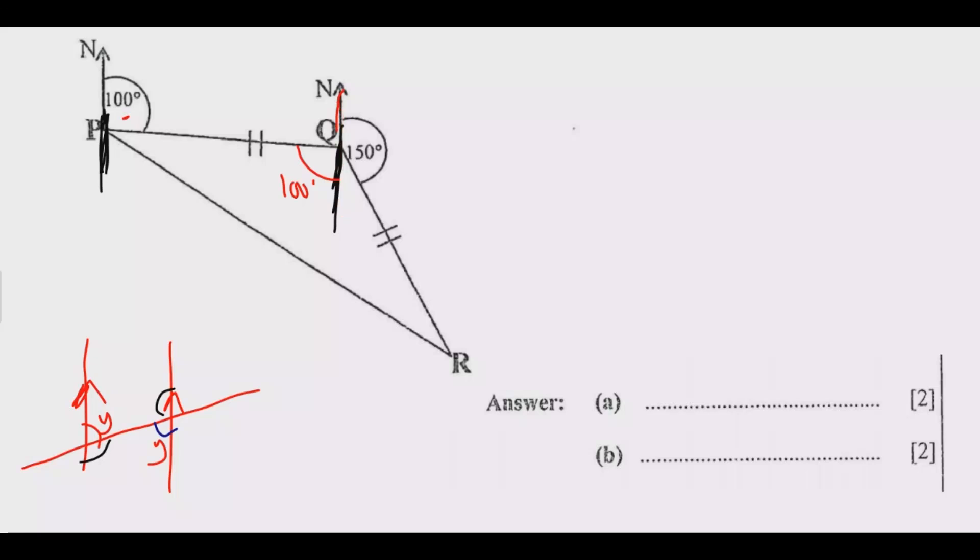Because the north is a straight line, I can call this angle M. So M plus 150 degrees equals 180 degrees. Therefore M equals 180 minus 150, which is 30 degrees. So Z equals 100 degrees plus 30 degrees, which equals 130 degrees.